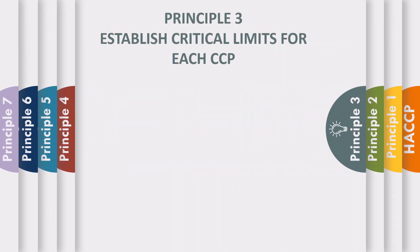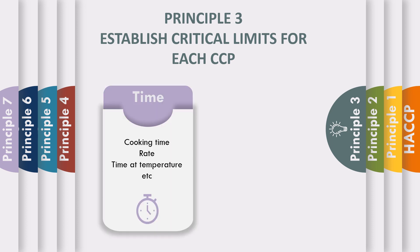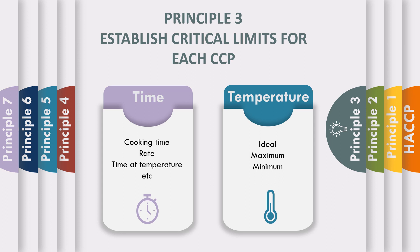Principle 3: Establish critical limits for each critical control point. A critical limit ensures that a hazard is controlled by a critical control point. Each critical control point should have at least one critical limit. Critical limits must be something that can be monitored by measurement or observation, and must be scientifically and/or regulatory based. Examples include time — cooking time, cooking rate, time at temperature — or temperature, such as the ideal, maximum, or minimum temperature.